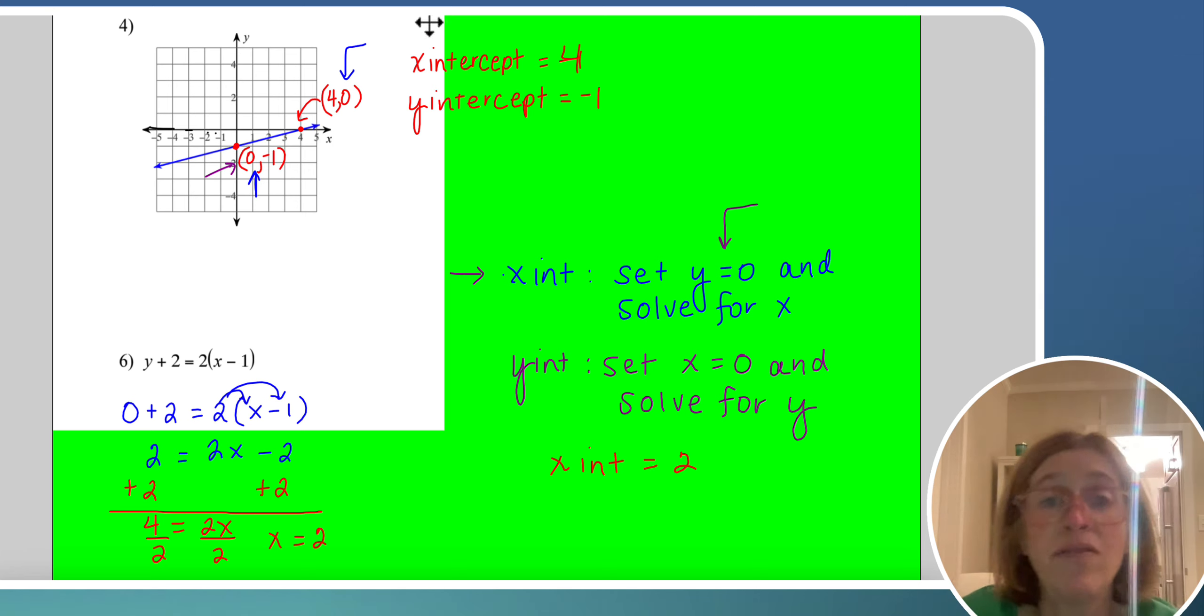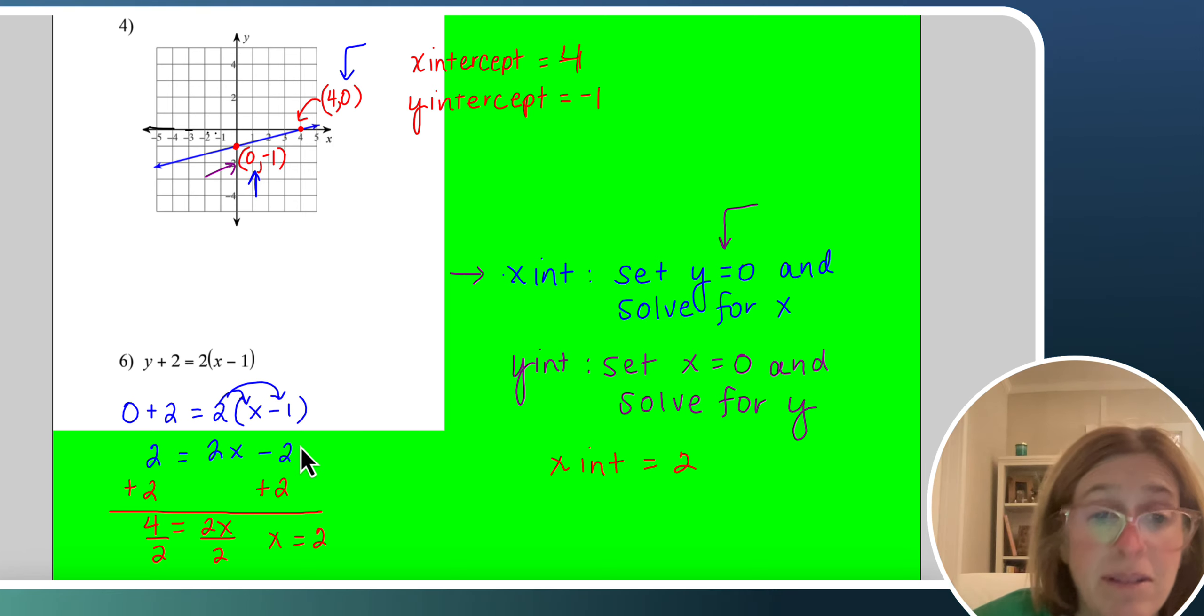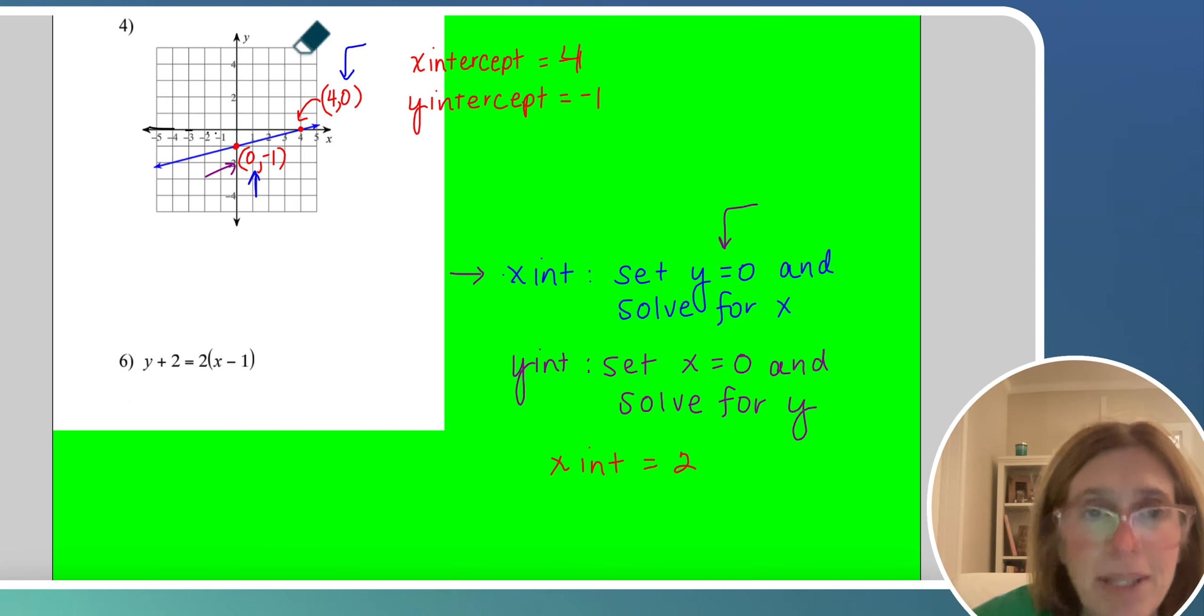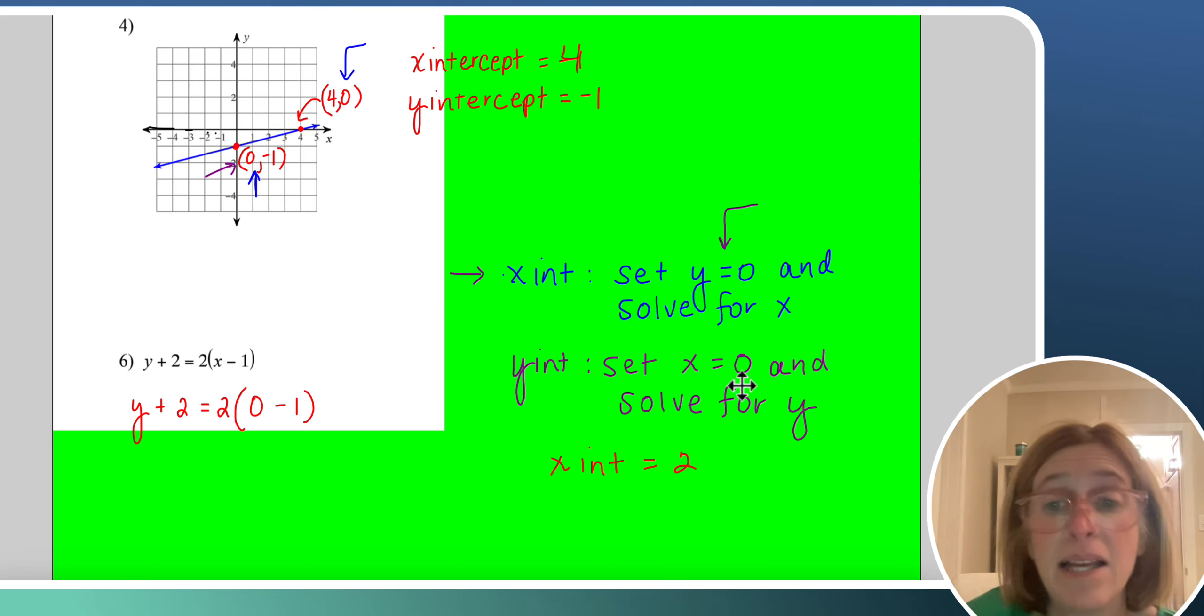If I want to find the y intercept, what do I do? I do the opposite. I set x equal to 0 and solve for y. So I'm going to do y plus 2 equals 2, parentheses, 0 minus 1. Look. I set x equal to 0. So 0 minus 1 is negative 1.